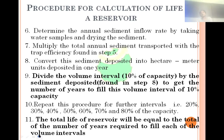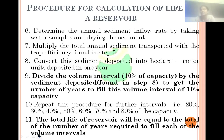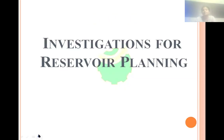By following these procedures, we get the number of years for each interval. For 90 to 80 percent, how many years? 80 to 70, how many years? And so on up to 20 percent. Each interval's years are calculated. Finally, the total years are summed up — how many years does it take to reduce the capacity to 20 percent. This total is the lifetime of the reservoir.